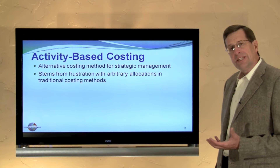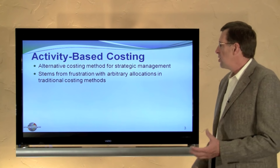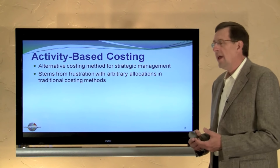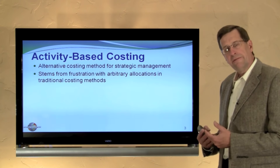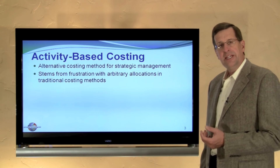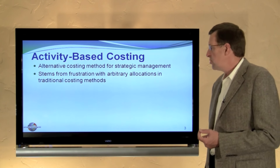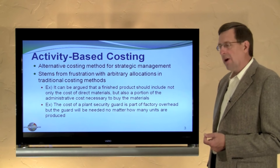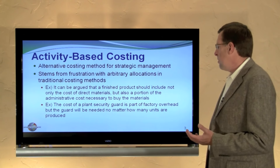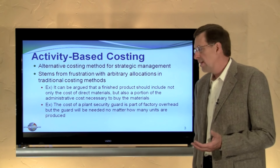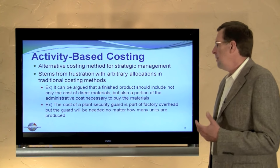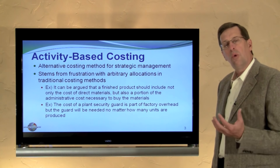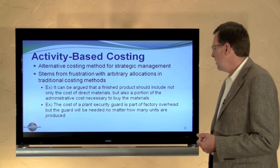Activity-based costing systems are alternatives to traditional costing systems. They arise out of frustrations with the arbitrary allocations that are part of the traditional costing model. For example, it can be argued that a finished product should include not only the cost of direct materials but also a portion of the administrative costs necessary to acquire those materials.